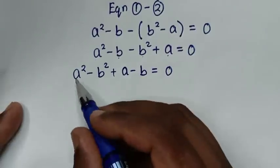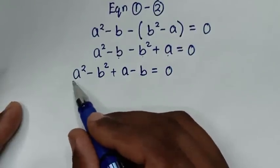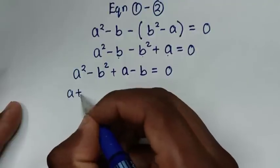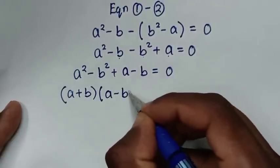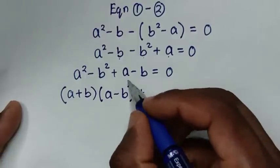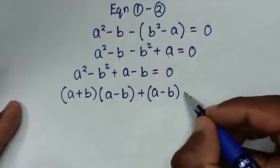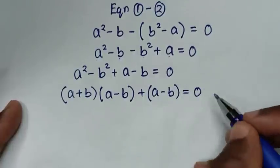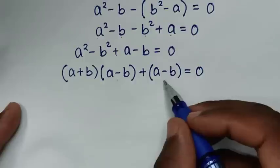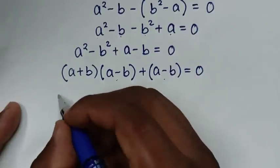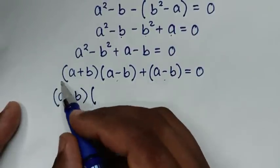We recognize a squared minus b squared as a difference of squares, so it factors as (a plus b)(a minus b). Then we have (a plus b)(a minus b) plus (a minus b) equals 0. Since a minus b is common, we factor it out to get (a minus b)(a plus b plus 1) equals 0.